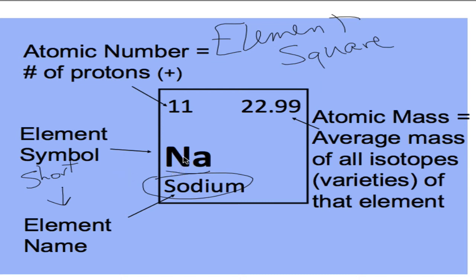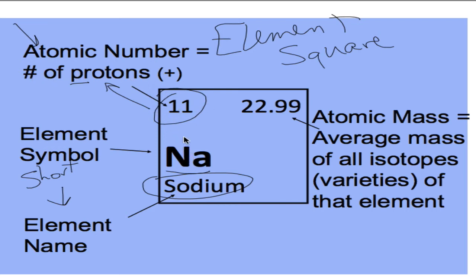Other than the element name and symbol, the atomic number is one of the most important things in the element square, because it tells you the number of protons in that element. Every single atom of sodium in the whole universe has 11 protons. If you somehow added or removed a proton, you would have a completely different element. So remember: the number of protons always stays the same for a given element — we can never add or take away protons.